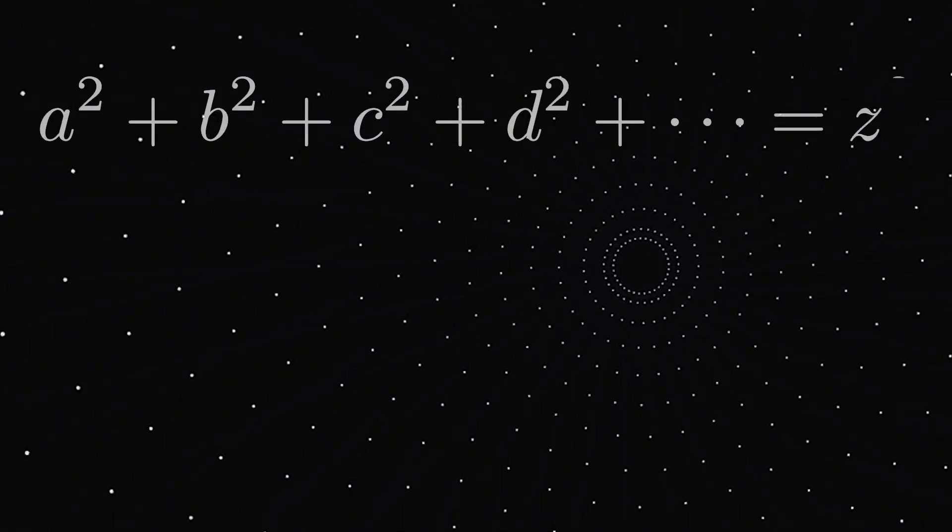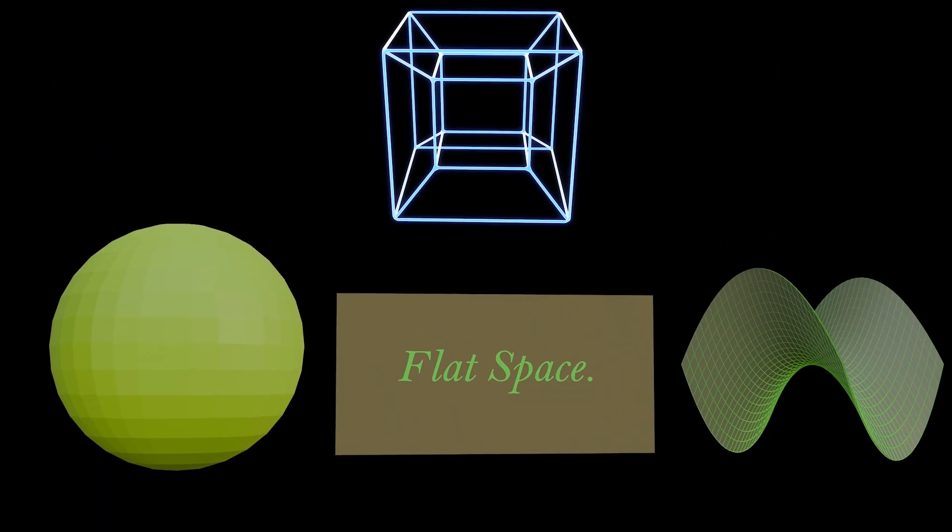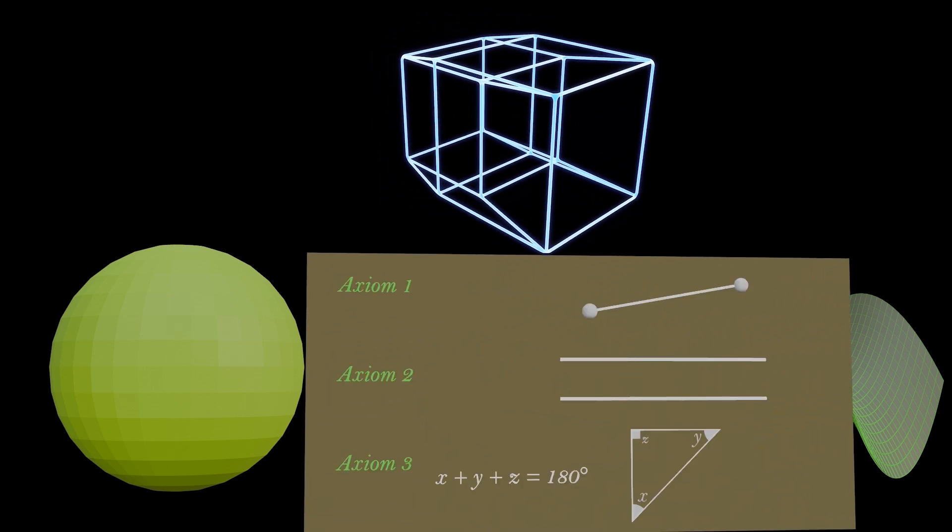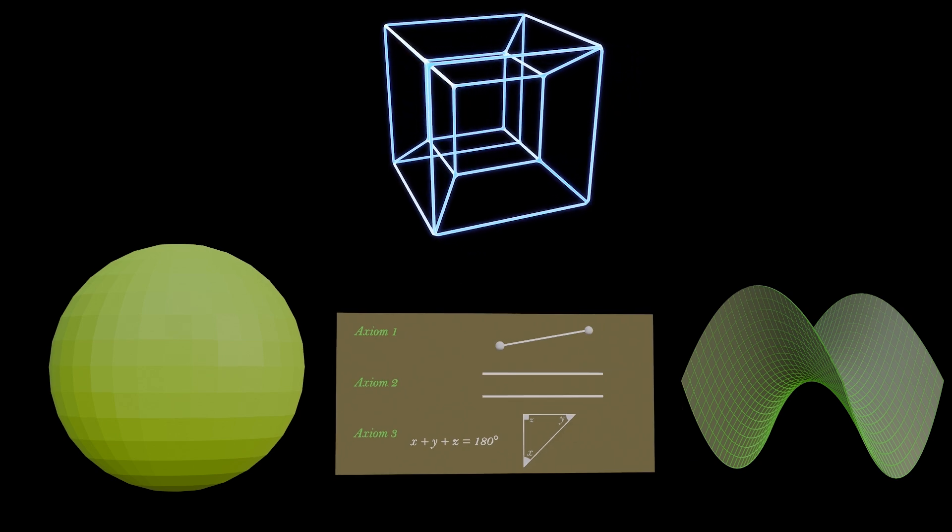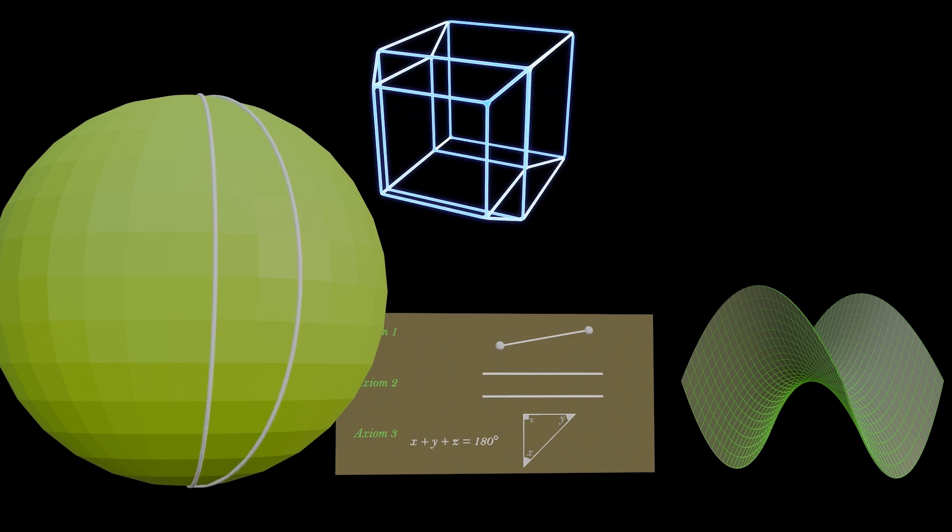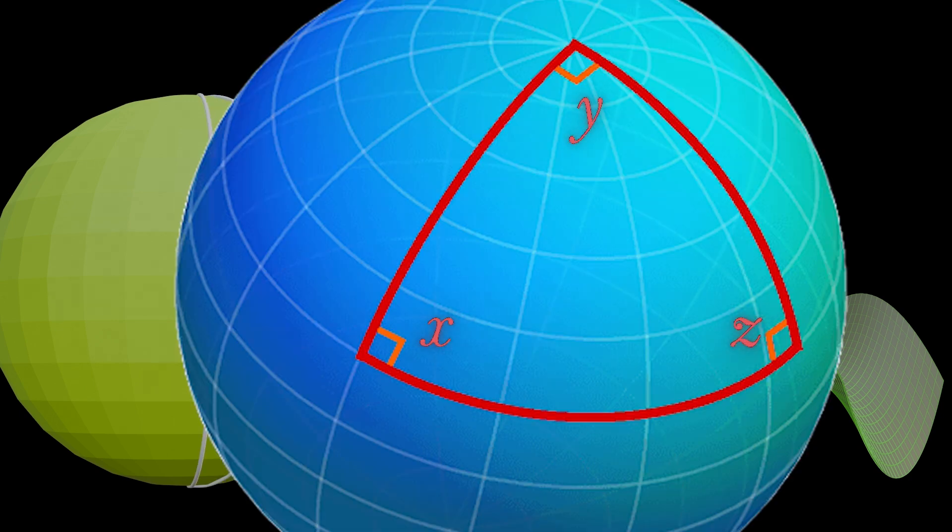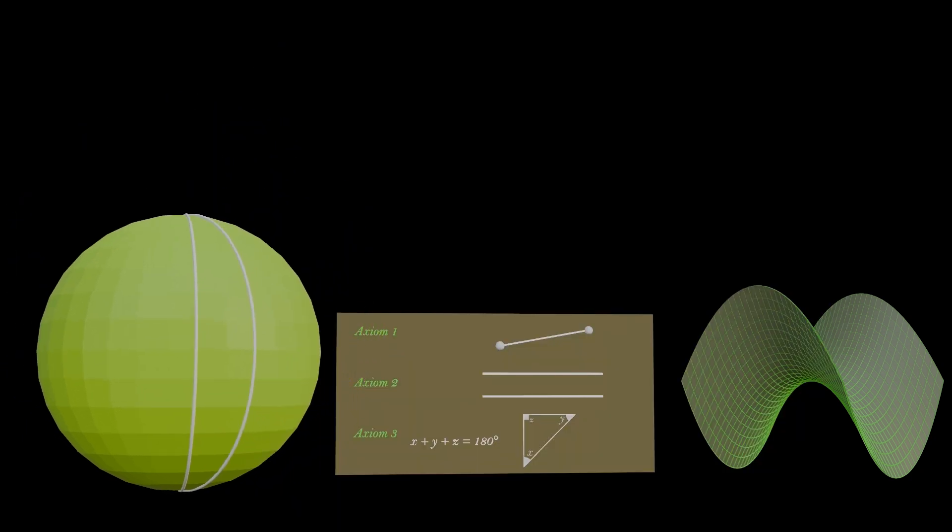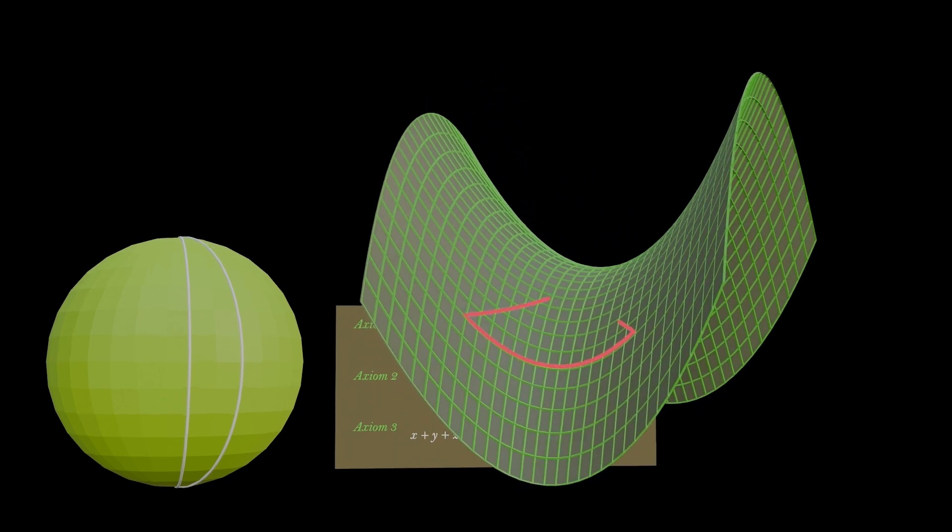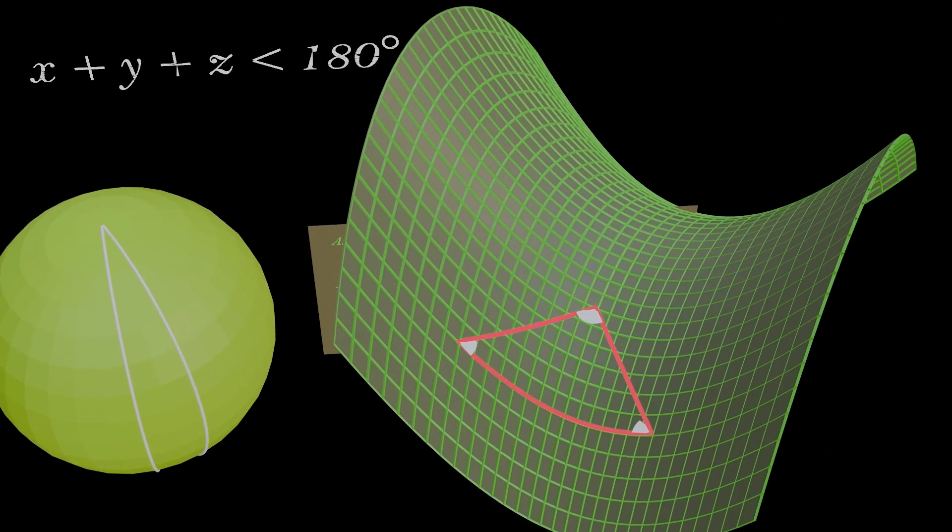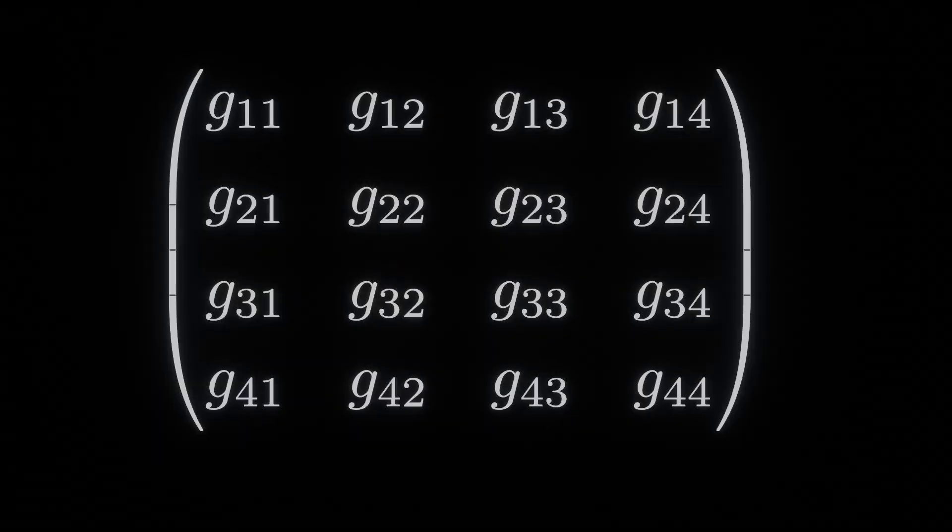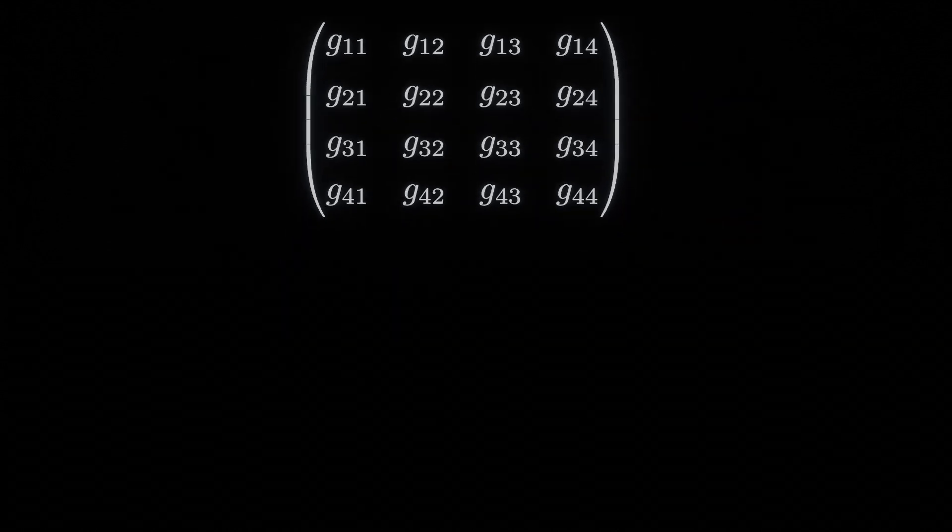Riemann then generalized these equations for spaces of arbitrary dimension. These spaces can be either flat or curved. If flat, then the usual axioms of Euclid apply. But Riemann also found that surfaces can have positive curvature, as in the surface of a sphere, where parallel lines always meet, and where the sum of the angles of a triangle can exceed 180 degrees. Surfaces can also have negative curvature, as in a saddle-shaped or a trumpet-shaped surface. On these surfaces, the sum of the interior angles of a triangle add to less than 180 degrees.